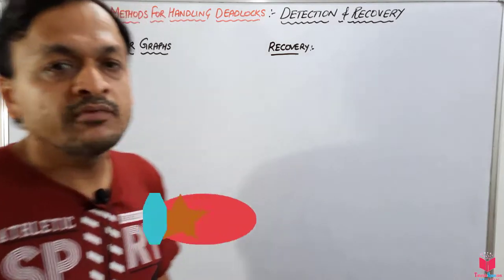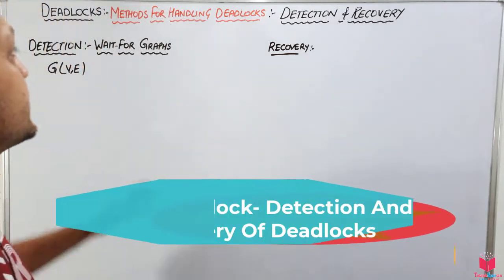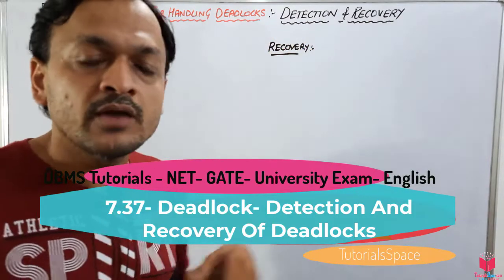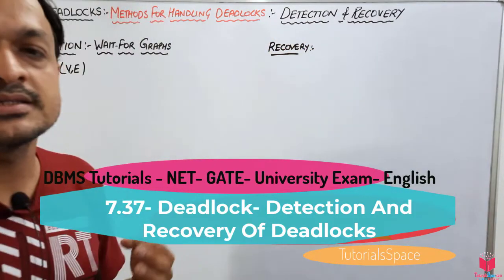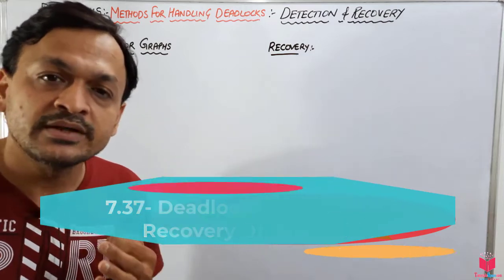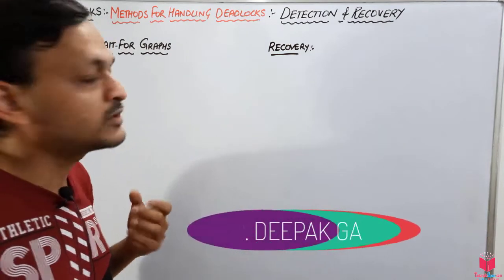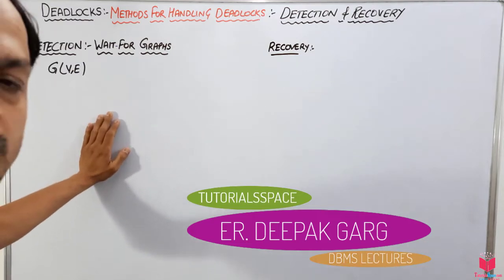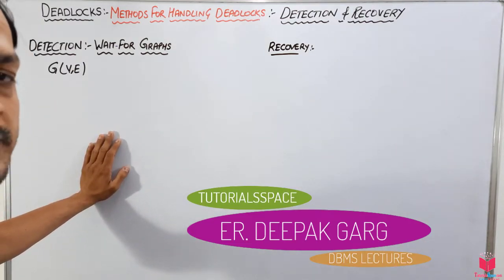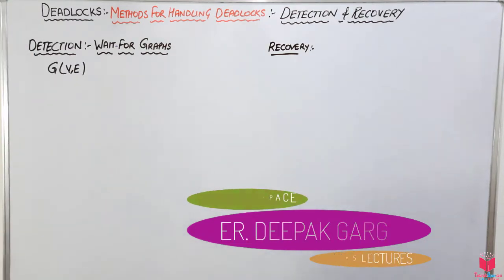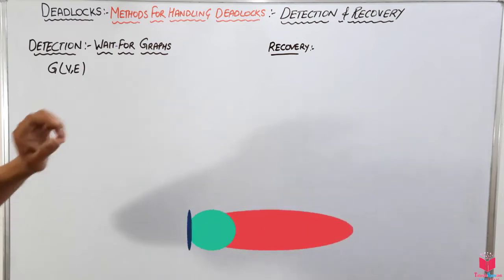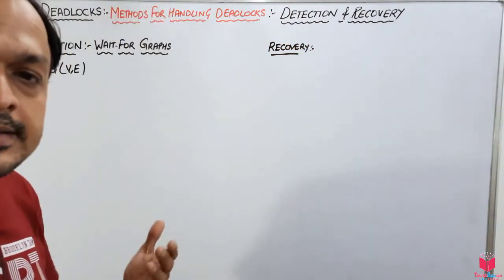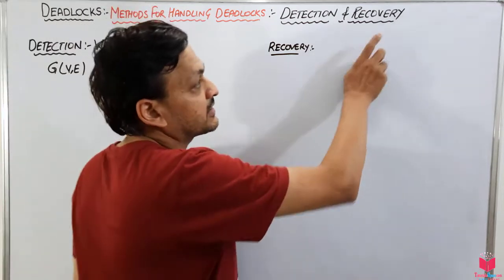Hello everyone. Today we will discuss the second method for handling deadlock, which is detection and recovery. We have already discussed the first method, which was the prevention method for deadlock. Those who have not watched that video, please go to the playlist and watch it. In this method, first we have to detect the deadlock in the system, then after finding the deadlock we will recover from it.